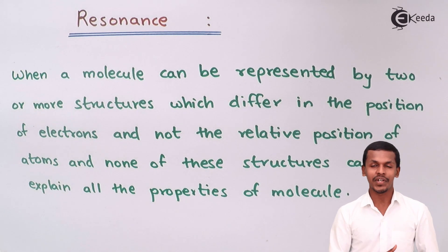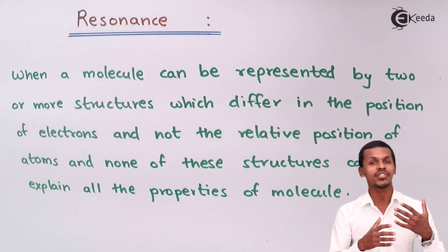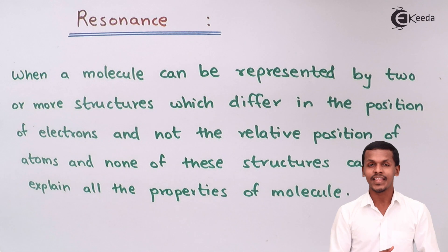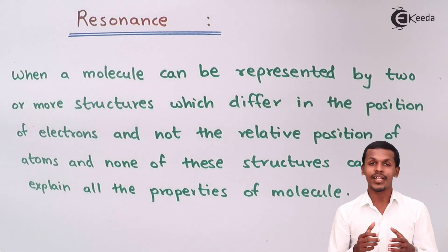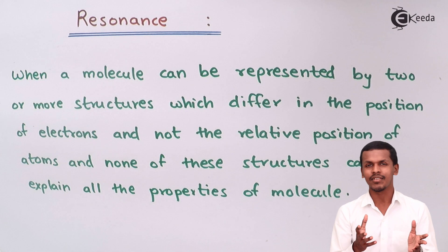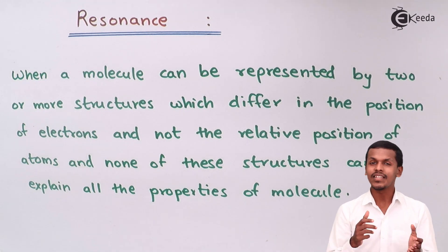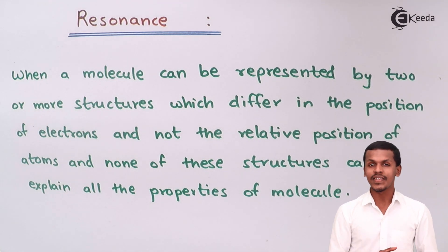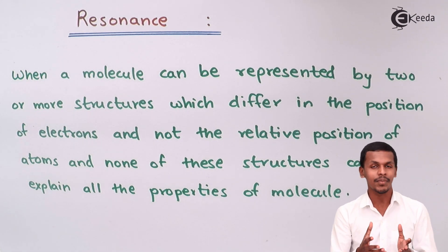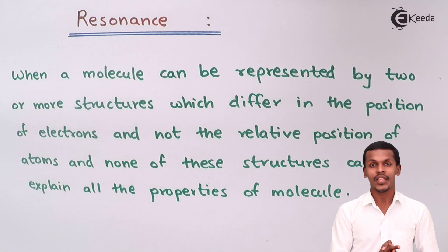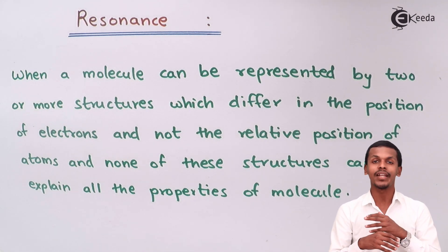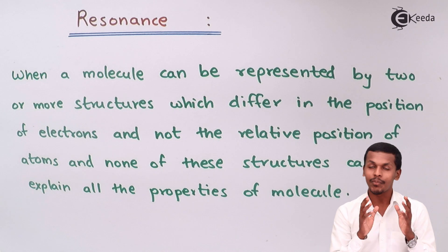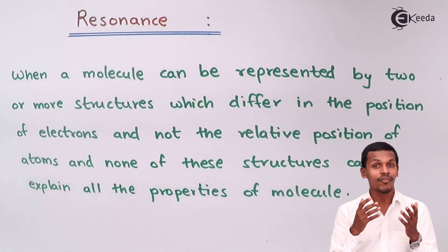Benzene has various resonating structures, and that is the reason delocalization of electrons takes place more in benzene compared to other alkynes like butene or propyne. That is why benzene is more stable. Resonance is the phenomenon where we can see various similar structures, but selecting any one of those structures will not completely describe all the properties of that particular molecule.